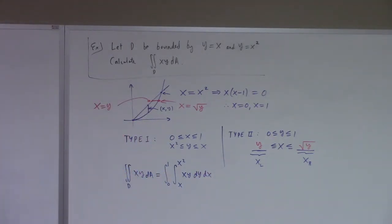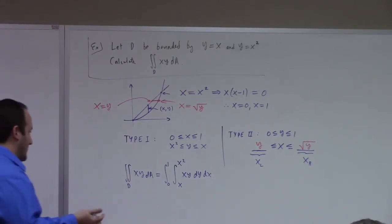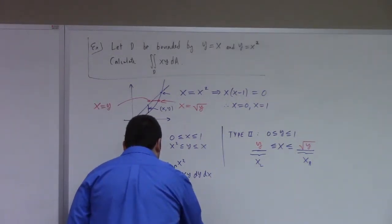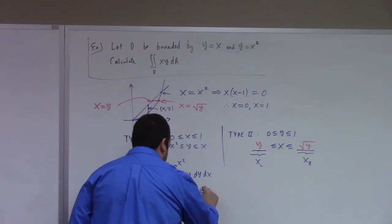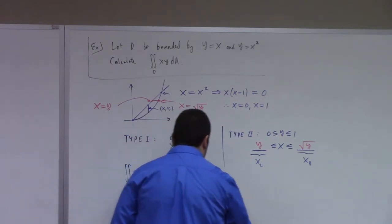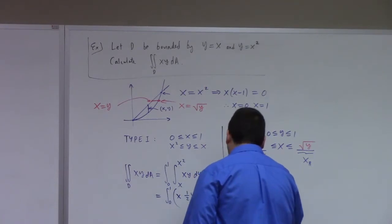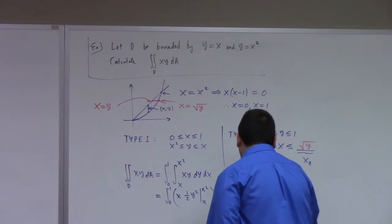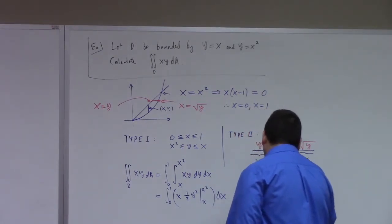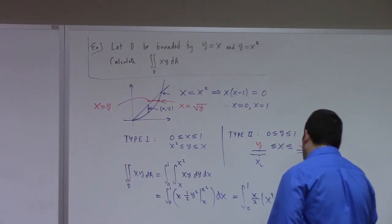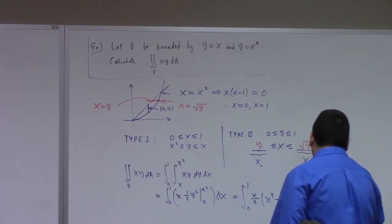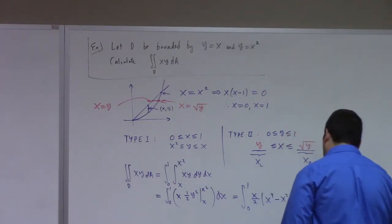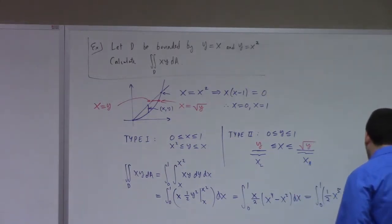Integral from 0 to 1, and y integrates to ½y². Let's see — I get x/2 times (x⁴ − x²) dx. That's the integral from 0 to 1 of ½x⁵ − ½x³ dx. When I integrate x⁵ I get (1/6)x⁶, and (1/6)(1/2) gives me 1/12. When I integrate x³ I get a quarter, and (1/4)(1/2) gives me 1/8. Evaluating from 0 to 1 gives me the difference of fractions.